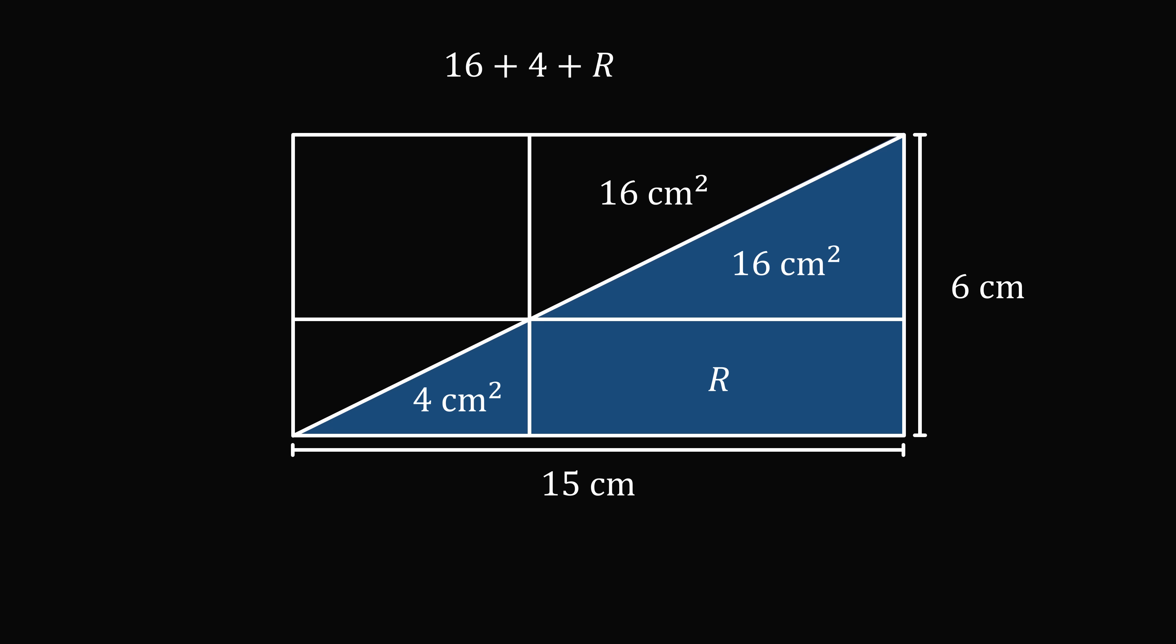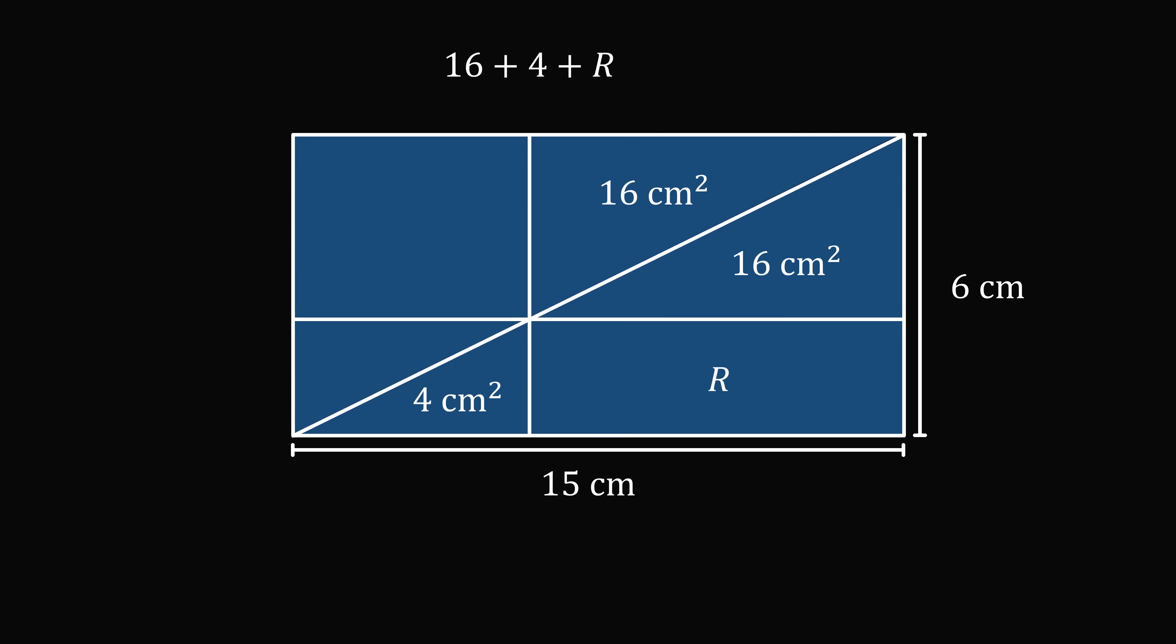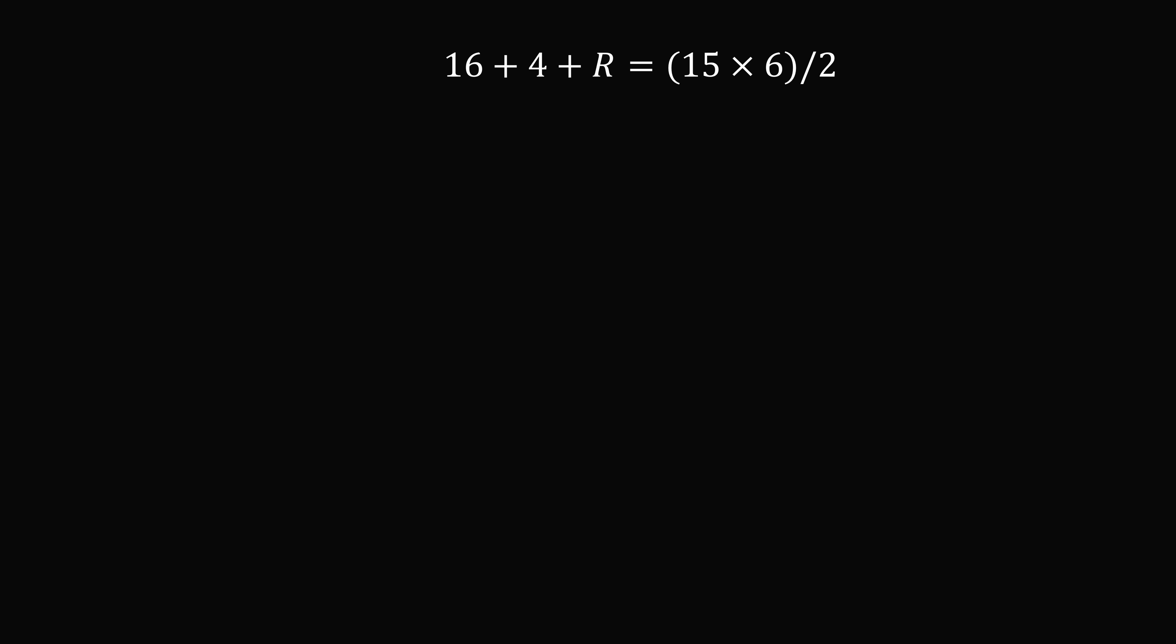What is the area of this triangle? It will be equal to 16 plus 4 plus r, but it will also be equal to half the area of the entire rectangle, so it will also be equal to 15 times 6 divided by 2. We have 20 plus r is equal to 45, and that means r is equal to 25 cm². And that's the answer!